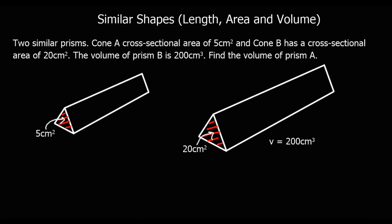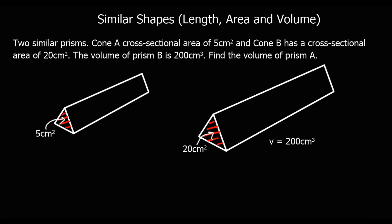Now we've got two similar prisms. Prism A has a cross-sectional area of 5 centimetres squared, and prism B has a cross-sectional area of 20 centimetres squared. We need to do a volume calculation, but first we work out the scale factor. The area scale factor is 20 over 5, which is 4.